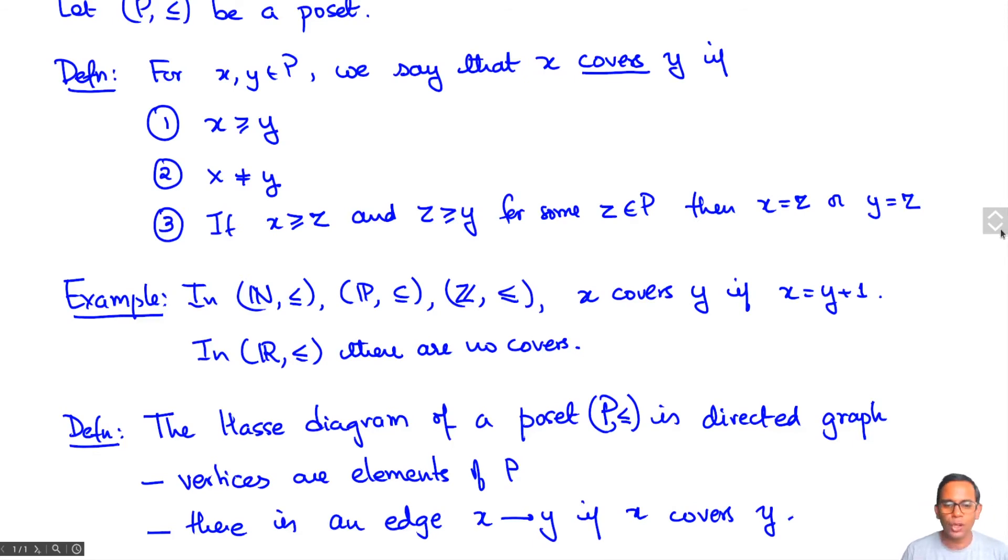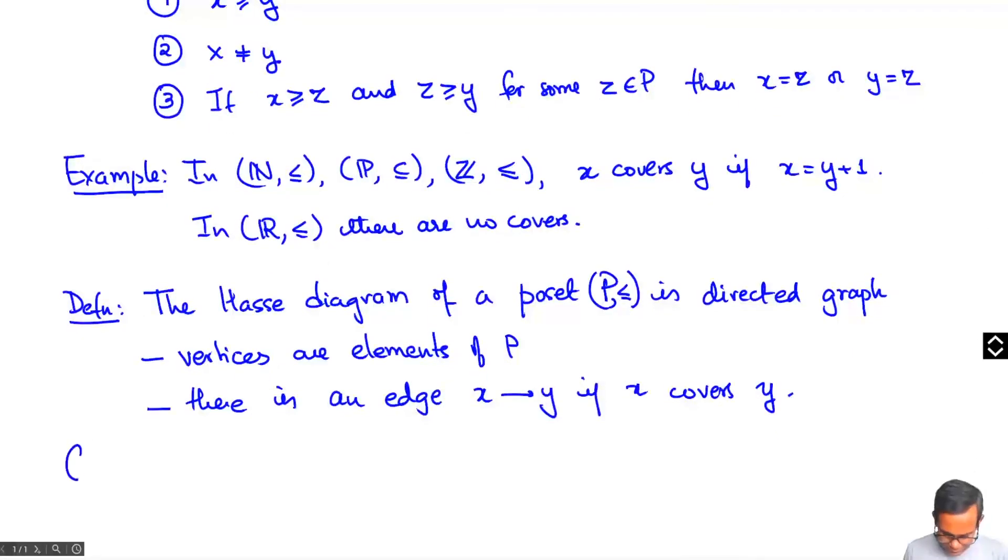Usually, we don't draw the arrows. The convention is that when we draw the Hasse diagram, we make sure that we draw the node x above the node y on the page. x greater than or equal to y means that we draw x above y on the page.